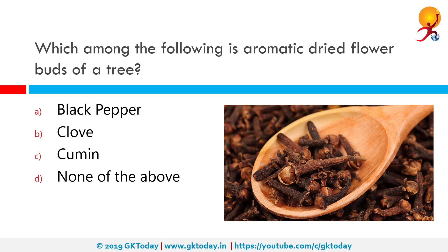Which among the following is an aromatic dried flower bud of a tree? The correct answer is cloves. Cloves are aromatic flower buds of a tree in the family Myrtaceae, Syzygium aromaticum. They are native to the Maluku Islands in Indonesia and are commonly used as a spice.